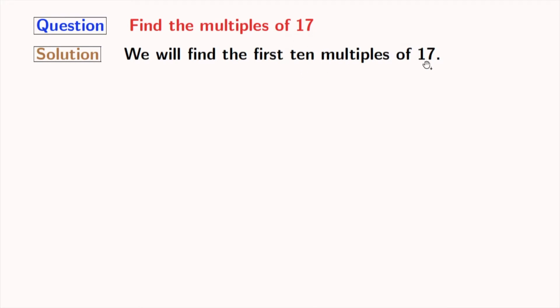Let's start multiplying 17 with 1. This gives us 17. Multiplying 17 with 2, we get 34. Multiplying 17 with 3, we get 51.